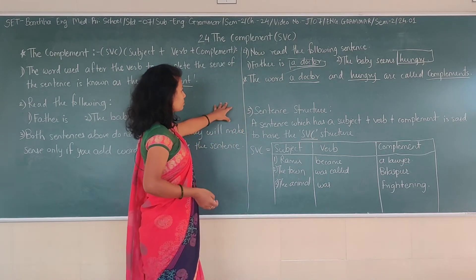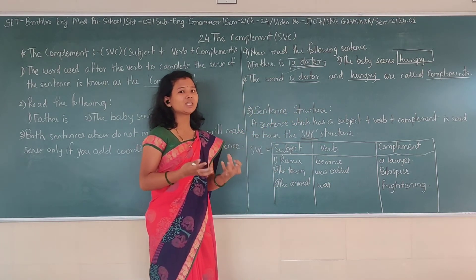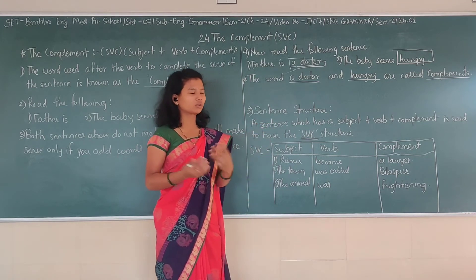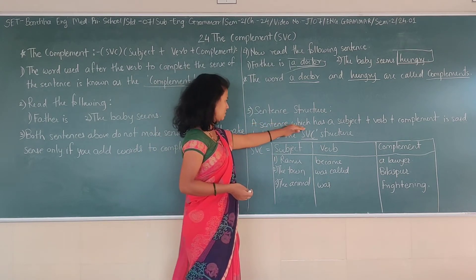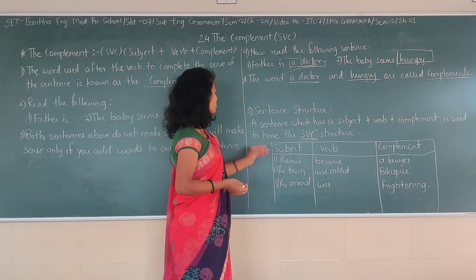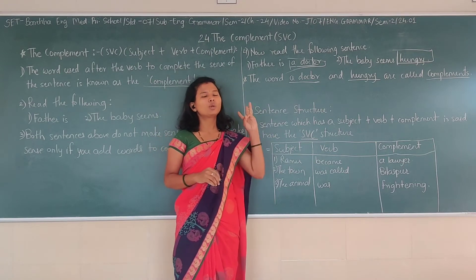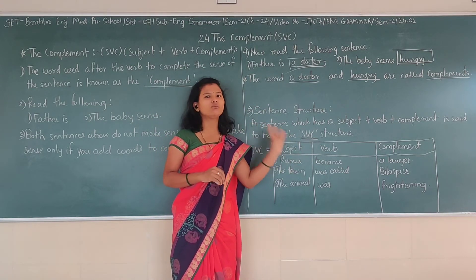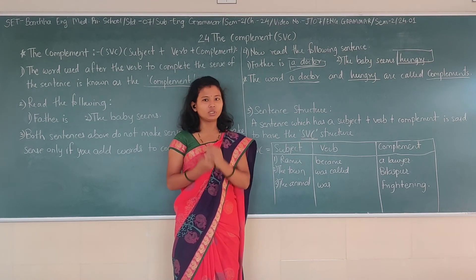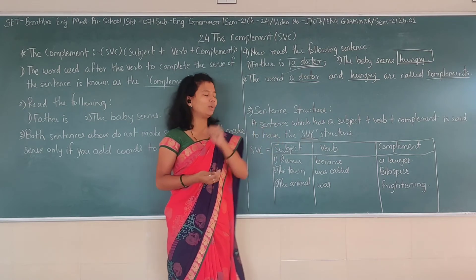Now we will see what the SVC structure is. A sentence which has a subject, verb, and complement is said to have the SVC structure. It means you should have these three elements in your sentence for it to be an SVC structure: subject, verb, and complement.